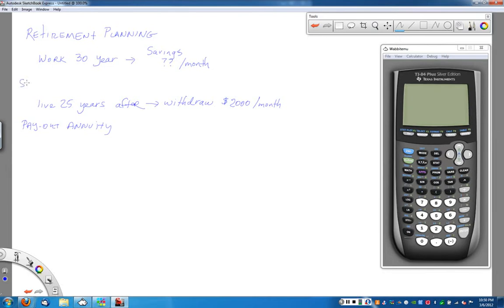This part of the problem is a savings annuity. Because while I'm working, I'm trying to take money out of my paycheck to save and I'm building up my retirement account. When doing retirement planning, we need to use both the savings annuity formula and the payout annuity formula to solve the problem.